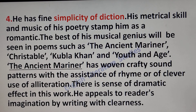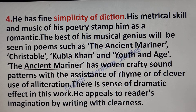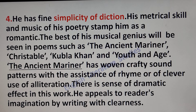Next, he has fine simplicity of diction. His metrical skill and the music of his poetry stamp him as a romantic poet. The best of his musical genius is seen in poems such as The Ancient Mariner, Christabel, Kubla Khan, and Youth and Age. The Ancient Mariner has wonderfully crafted sound patterns with the assistance of rhyme and clever use of alliteration. There is a sense of dramatic effect in this work, and he appeals to readers' imagination by writing with clearness.